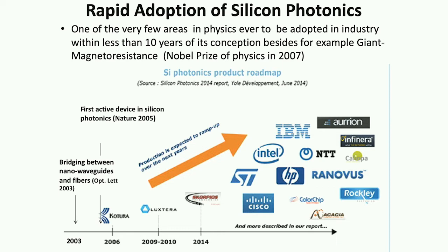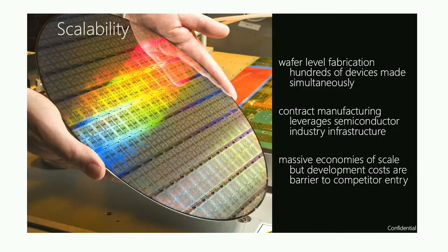Silicon photonics started in 2003. We've demonstrated the critical components for that and have more than 40 patents granted. At least half of them have been licensed by multiple companies across different applications. Today, this field moved from just simple theoretical ideas to actual products being commercialized in less than 10 years.